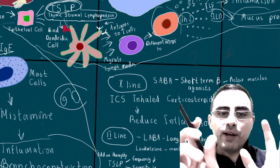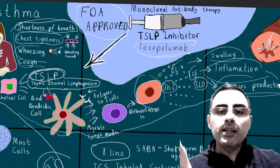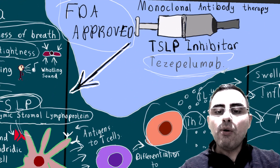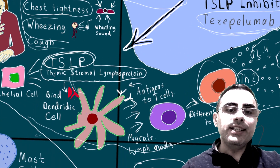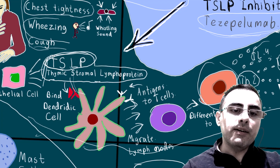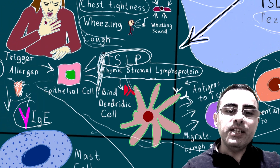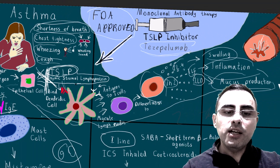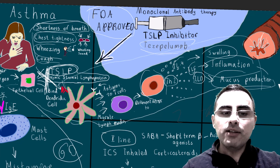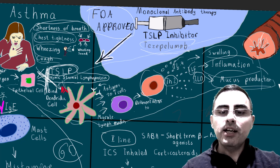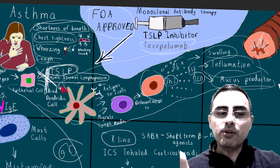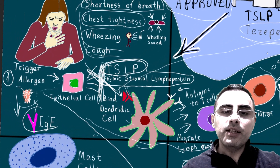So we have two pathways leading to symptoms. What does this new drug do? Tezepelumab, a TSLP inhibitor, inhibits TSLP — blocking this entire first pathway. This is a huge improvement because it cuts the chain of dendritic cell activation, T lymphocyte activation, maturation, differentiation, interleukin release, and ultimately asthma symptoms.